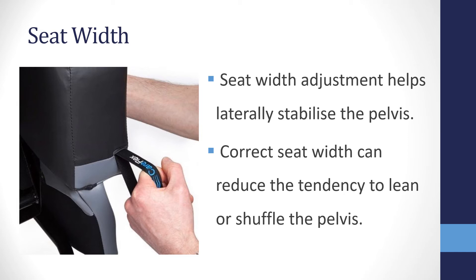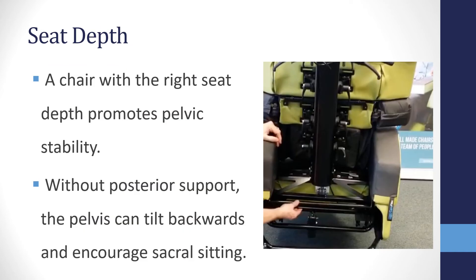Left unmanaged, this leaning posture could lead to the development of a scoliosis, for example. A chair with the right seat depth ensures pelvic stability by supporting the pelvis posteriorly. Without this posterior support, the pelvis can tilt backwards and encourage sacral sitting with a posterior pelvic tilt. If the seat depth is too long, the user won't be able to flex their knees over the seat edge, so they will slide forward in the chair to allow knee flexion. If the seat depth is too shallow, the area over which body weight is distributed may be reduced, which can increase the risk of pressure injury.